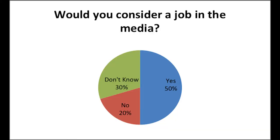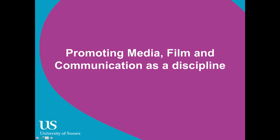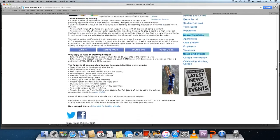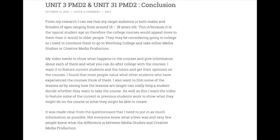To find out what I need to include in my social action video promoting the Worthing College media department, I conducted both primary and secondary research. My primary research consisted of focus groups and a questionnaire, which both gave me valid information on my target audience and what people want to see in the video. For my secondary research, I looked at a presentation by the University of Sussex and the Worthing College website, which both provided me with facts and figures which I can include in my video.